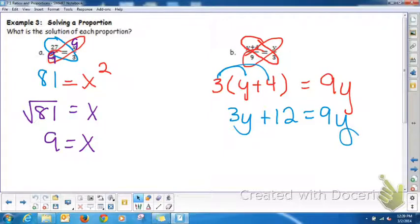Use the subtraction property to get that 12 is equal to 6y because I subtracted 3y from both sides. Then use the division property to get that y is equal to 2. 2 is y, y is 2. So when there's an expression such as y plus 4, you need to use the distributive property.